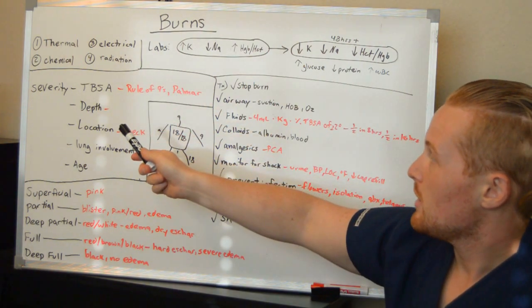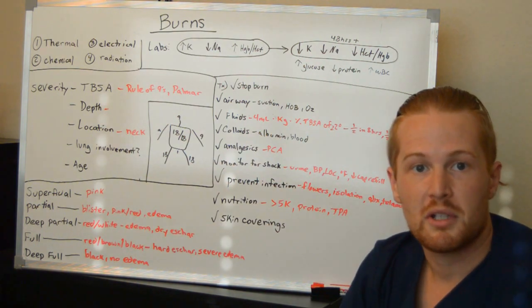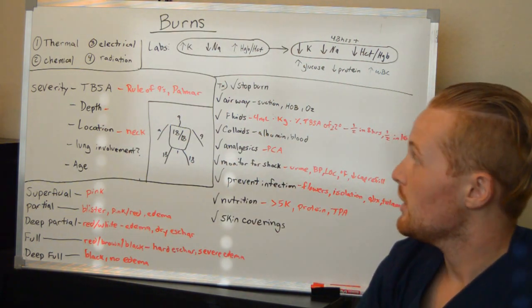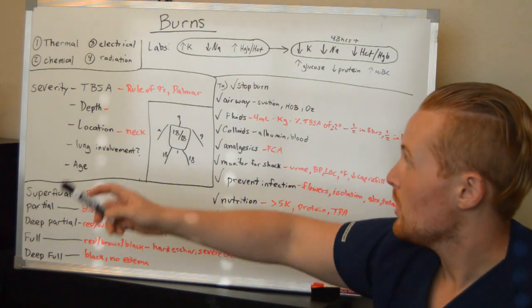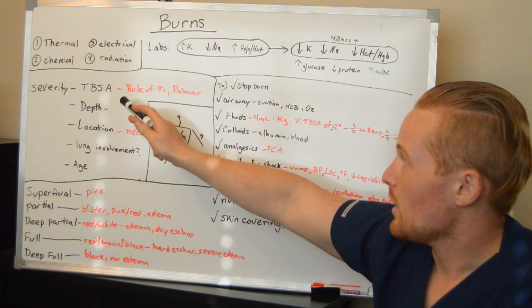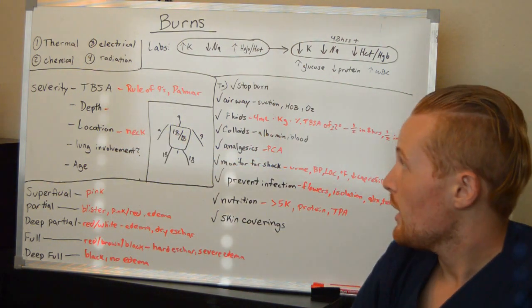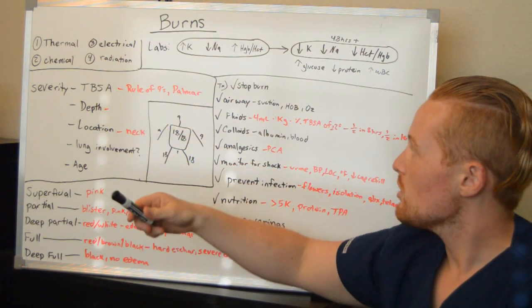Now, how do you determine the severity of a burn? And the severity is very important because this will go into treatment and how bad it is for the patient with the risk of fatality. So, the severity is based off a couple factors here. The total body surface area that is burned. And two ways to measure this I want to point out is one is the rule of nines.